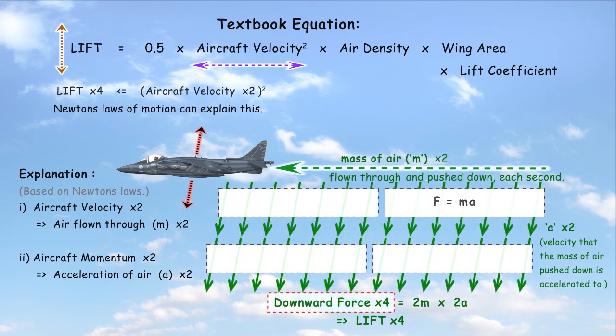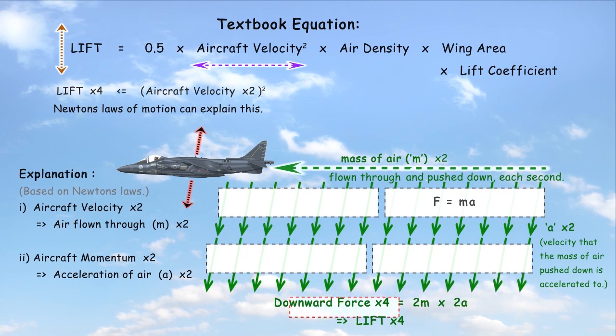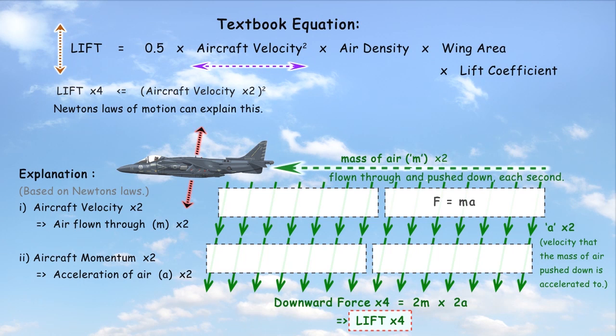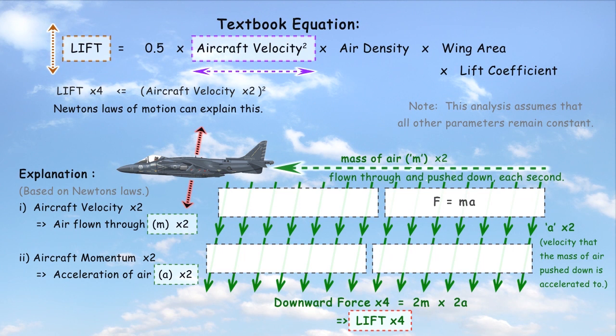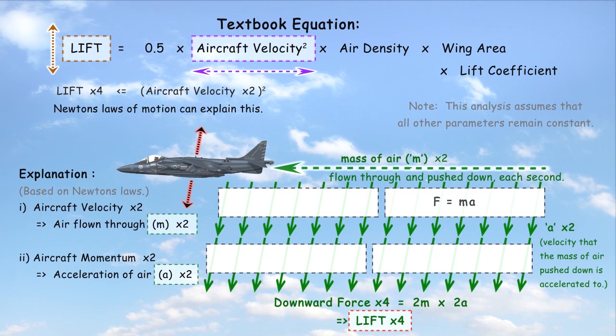In total, four times the downward force is created, and therefore four times the lift will be generated. This solves the conundrum by explaining the relationship between aircraft velocity and lift.